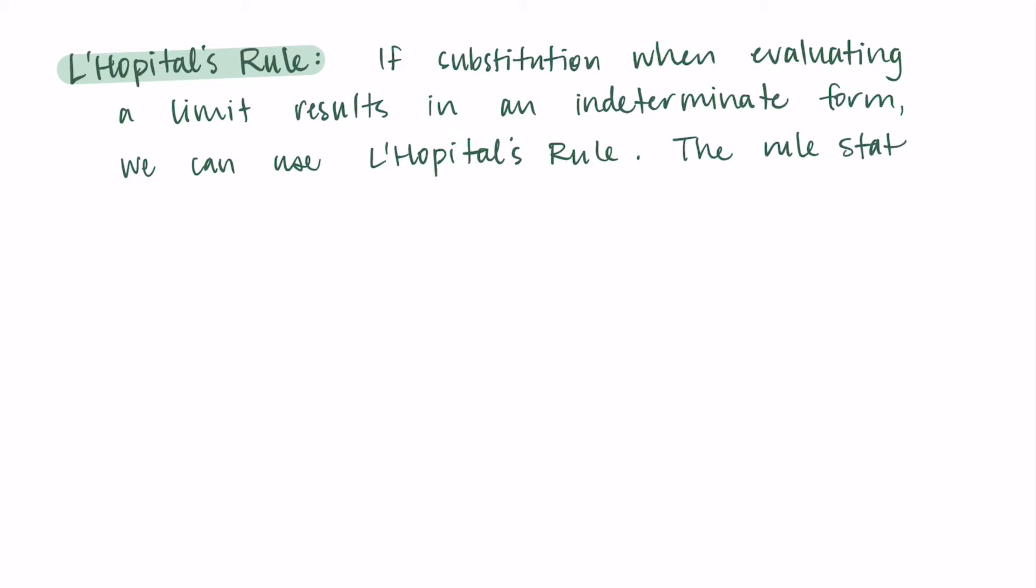The rule tells us that when we are doing a limit of a ratio of functions, and we get an indeterminate form when we substitute in a, then we can just take the derivative of each of those functions and do the limit again. So if we have the limit as x approaches a of f over g, we can rewrite it as the limit as x approaches a of f' over g'. We're not doing quotient rule here, we're just taking the derivative of the numerator and dividing it by the derivative of the denominator, and then evaluating that new limit.